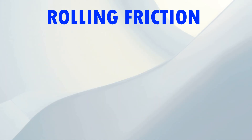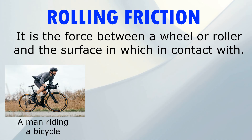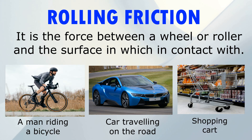Rolling Friction is the force between a wheel or a roller and the surface it is in contact with. Examples include a man riding a bicycle, a car traveling on the road, and a shopping cart.